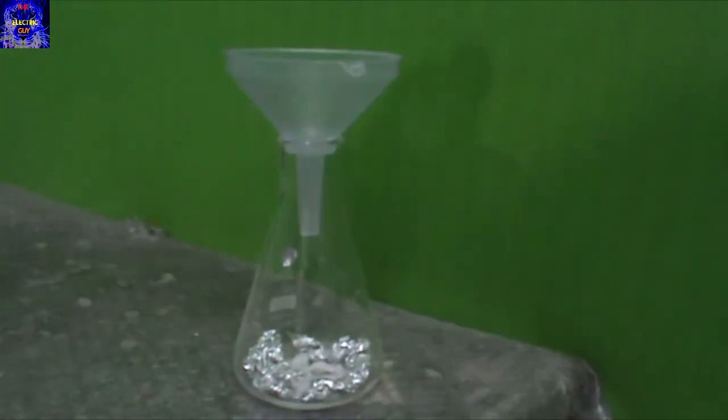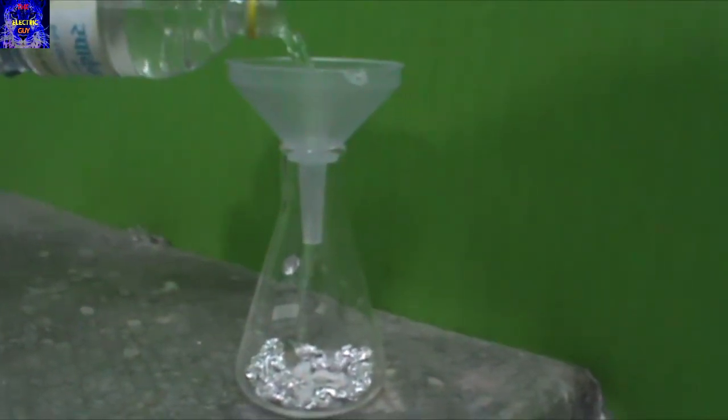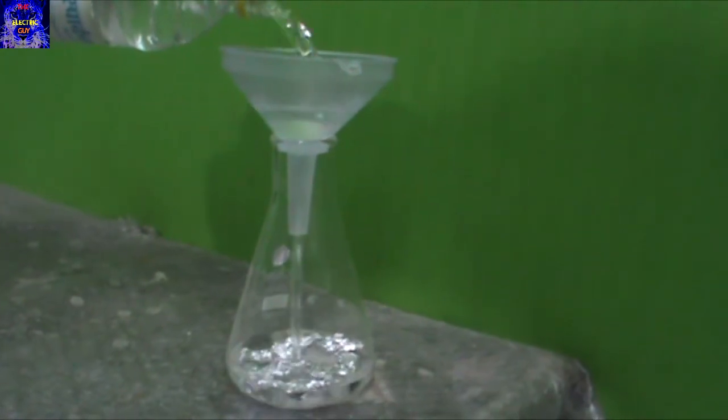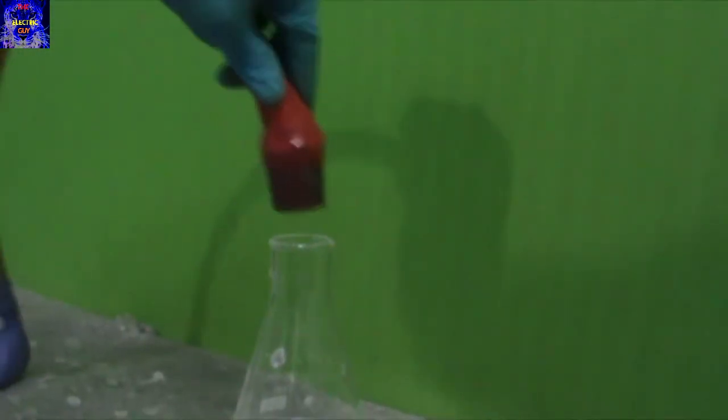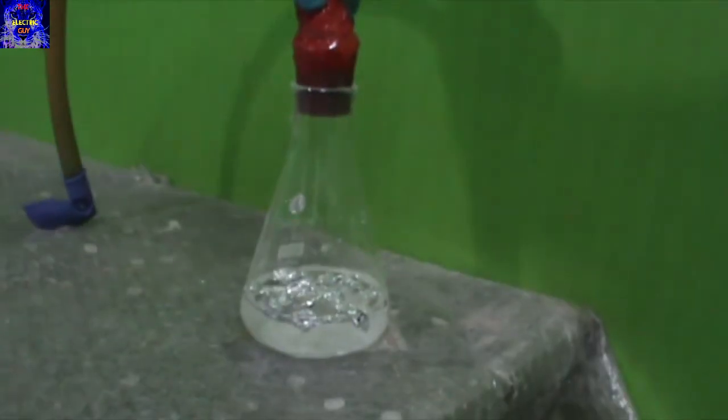Now add distilled water to the beaker with the help of a flask. After which, place the rubber stopper on the beaker.